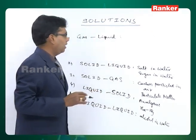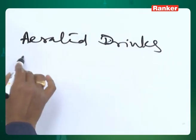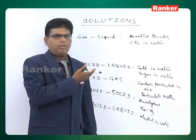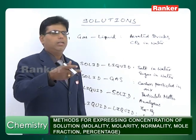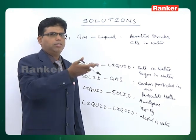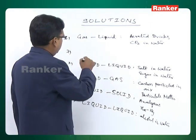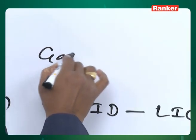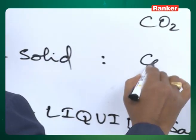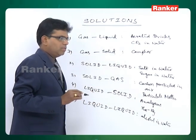Gas in liquid: the best example is aerated drinks — carbon dioxide dissolved in water. As you know, in aerated drinks like cola, a gas is dissolved in water forming a homogeneous solution, and when we open the bottle we get the carbon dioxide gas out. The next type is gas in solid, which is exemplified by camphor and naphthalene — sublimable solids that directly convert into a gas.